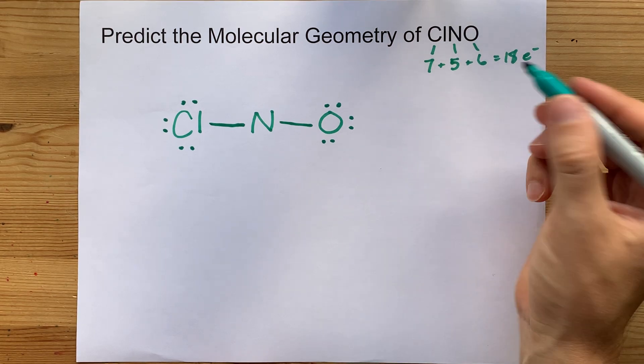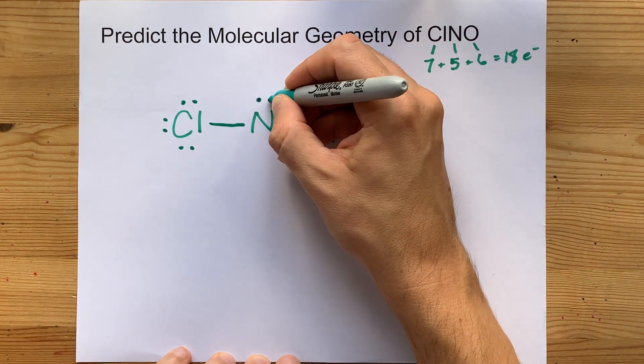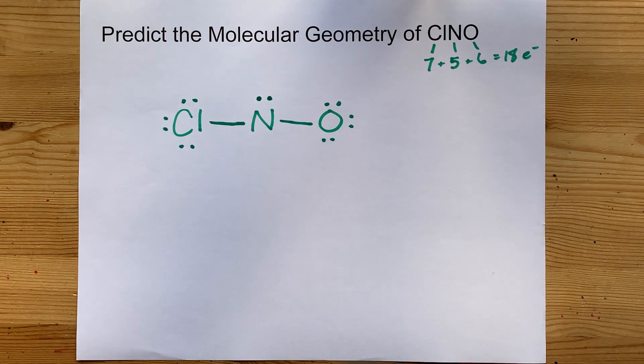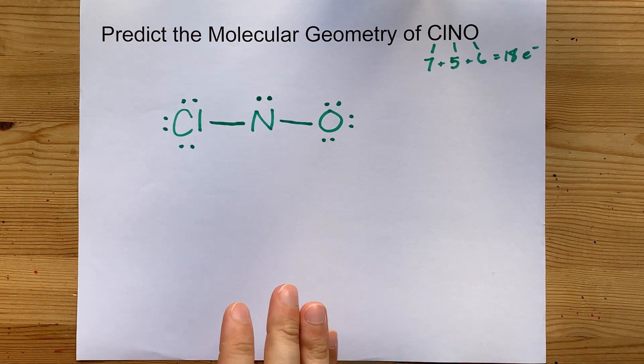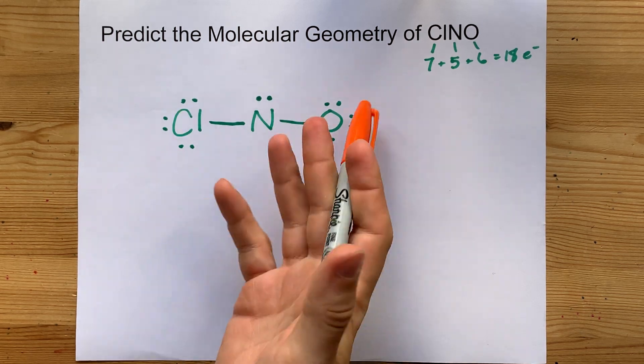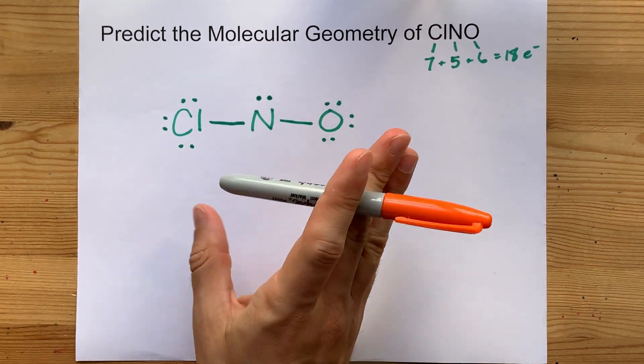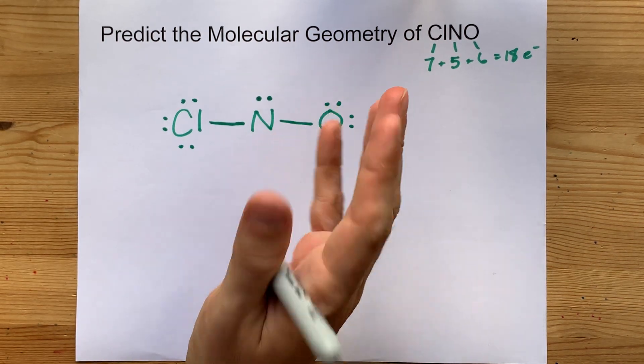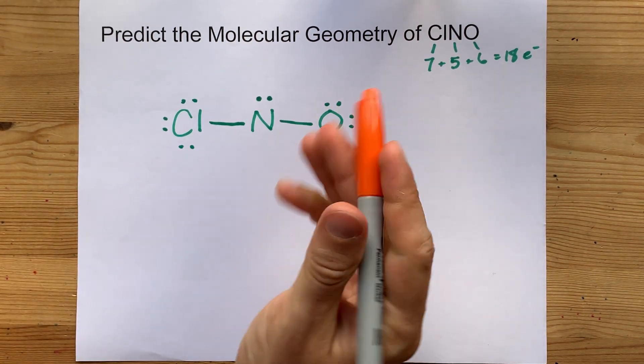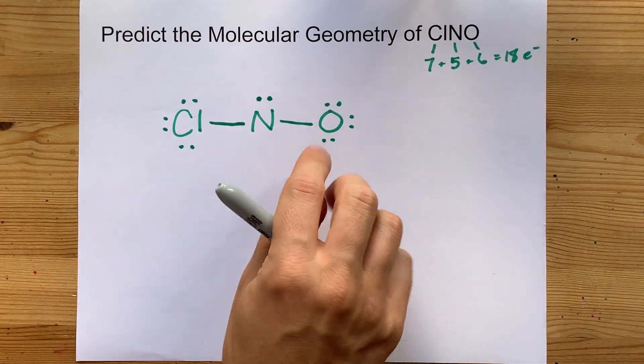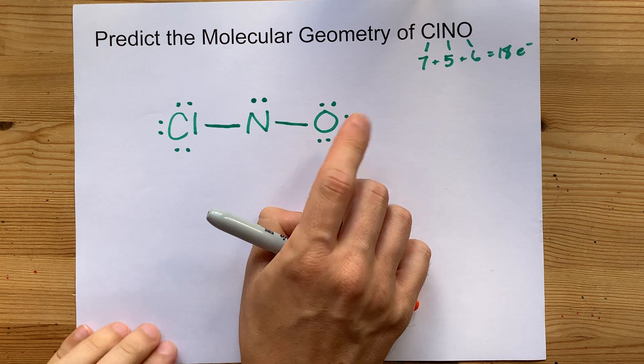So I take the extras and I dump them on the center atom. I don't have anywhere else I can put them. These octets were already full. And then we need to decide whether or not all of the octet rules have been satisfied here. You can use formal charge for this if you'd like, but I'm going to opt not to. This chlorine has 8 electrons. Great. This oxygen has 8 electrons. Great.